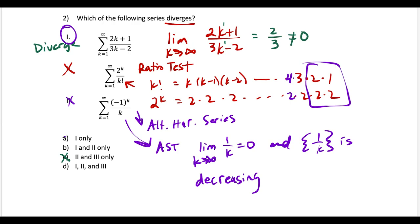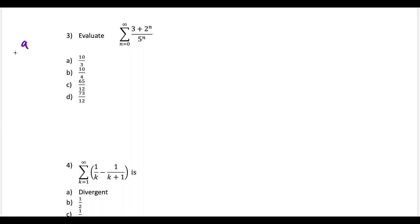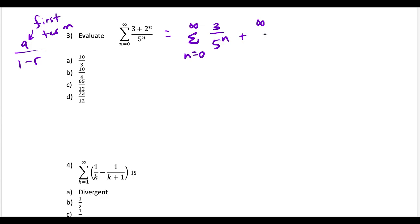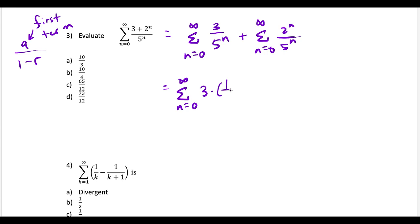Question three: we have to know how to evaluate a geometric series. If it converges, it converges to a over 1 minus r, where a is the first term. We break this up into two individual series: the series from n=0 to infinity of 3 over 5 to the n, plus the series of 2 to the n over 5 to the n. I rewrite the first as 3 times (1/5) to the n, and the second as (2/5) to the n.